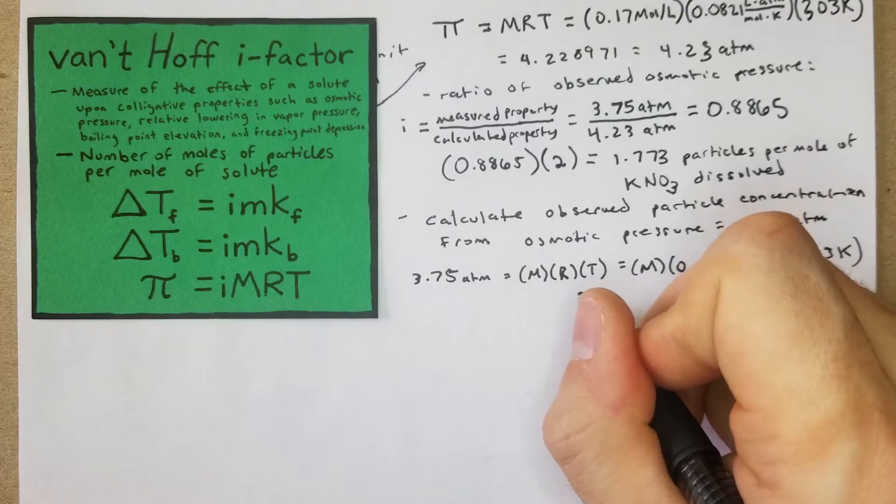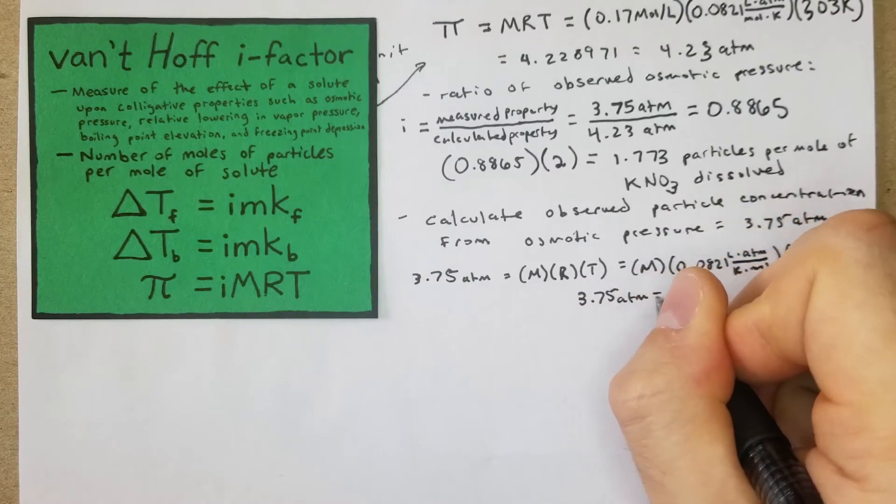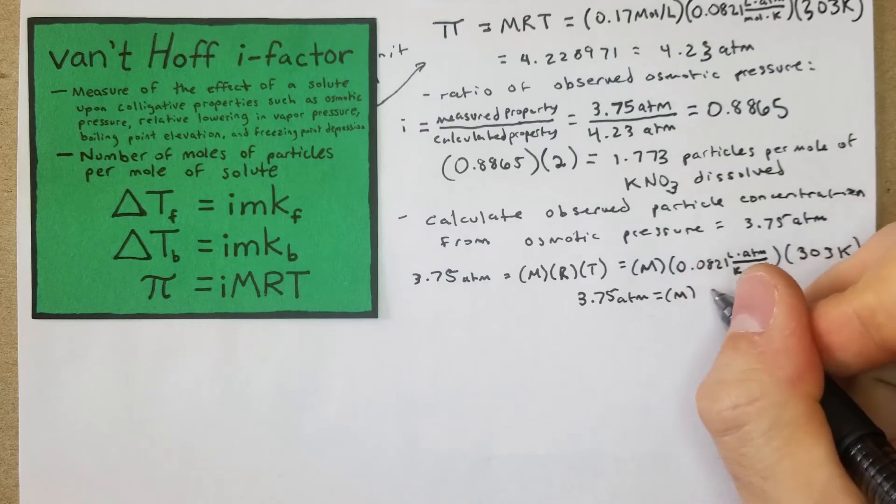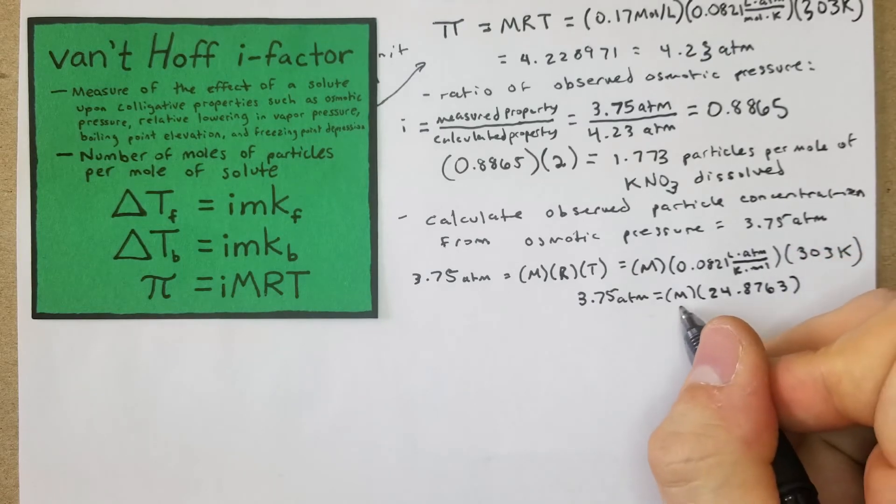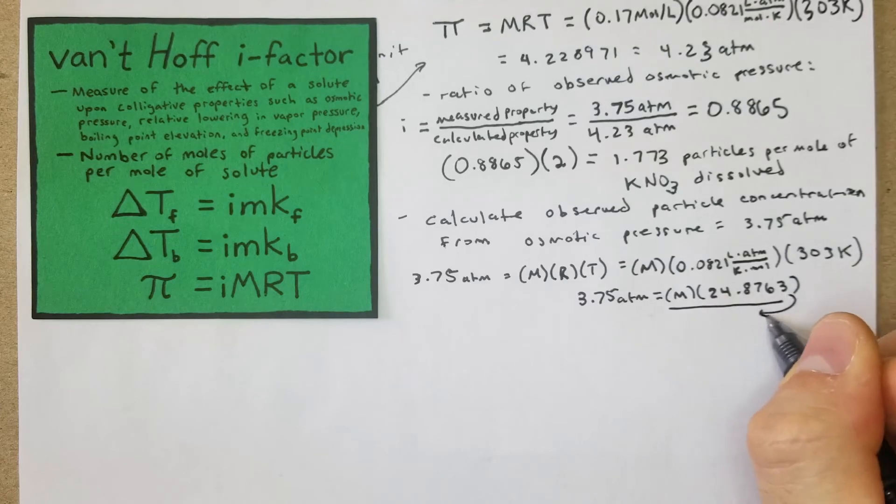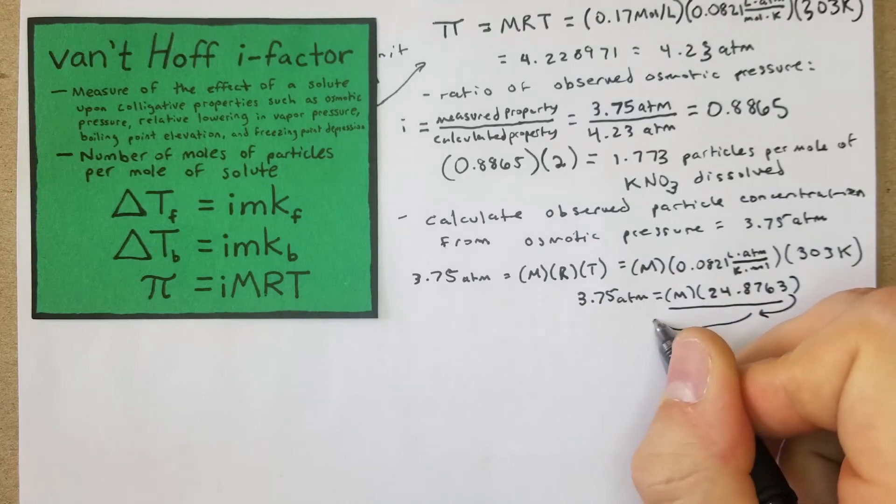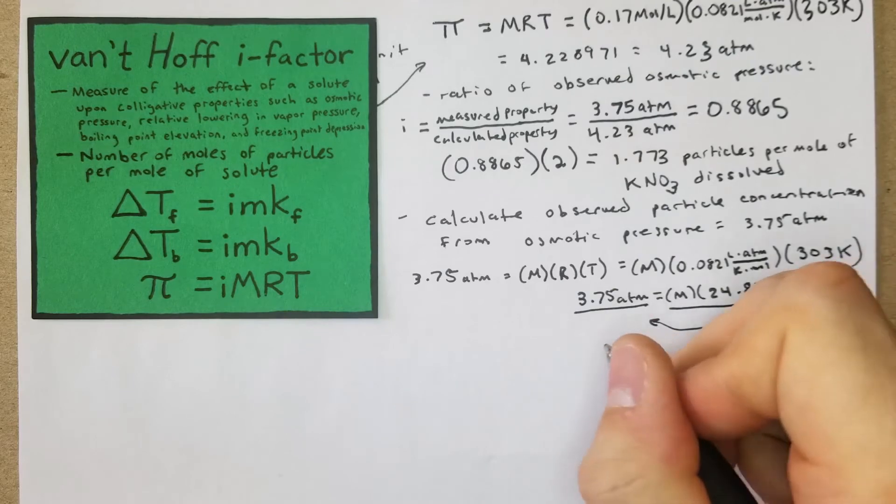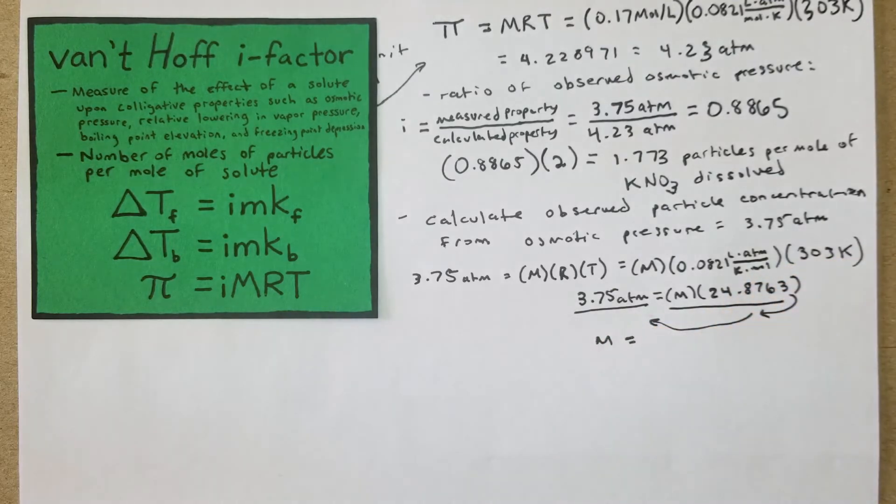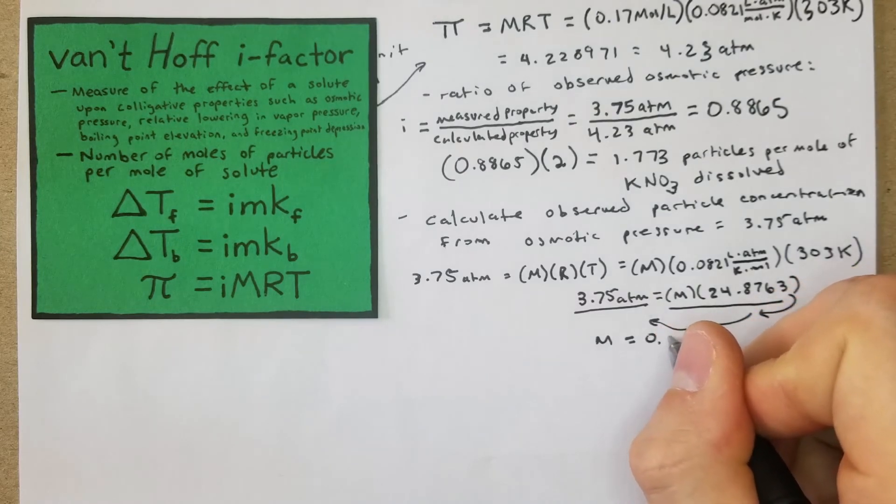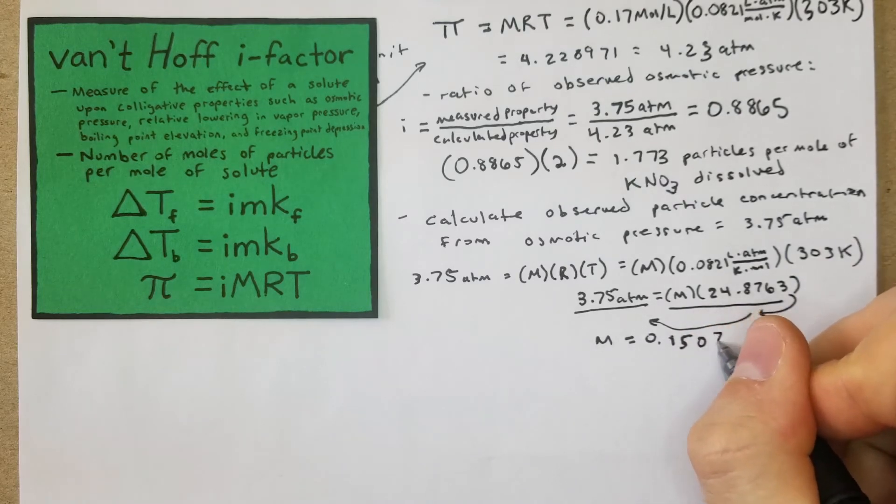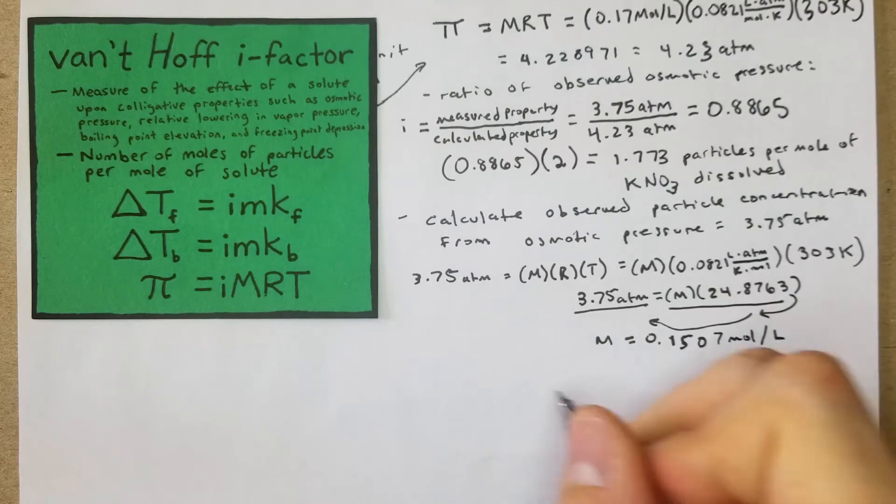So I got 3.75 atm is going to equal M times 24.8763, and then we're just going to divide both sides by that to get our M value. Our M value is going to be 0.1507 mole per liter.